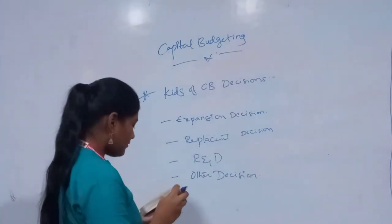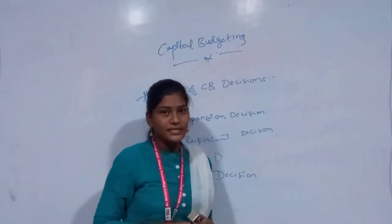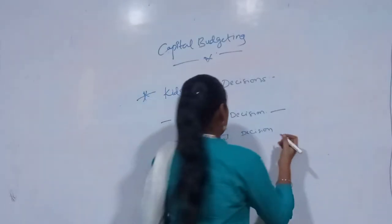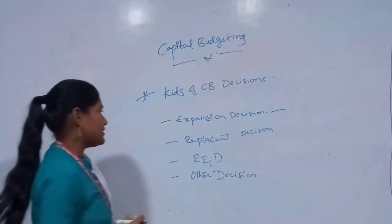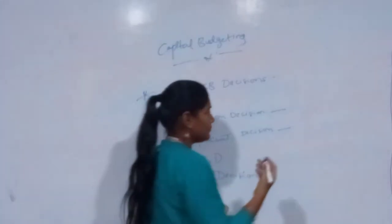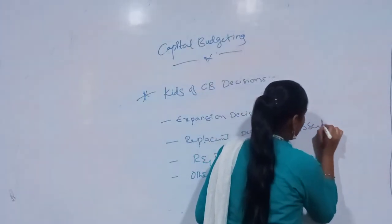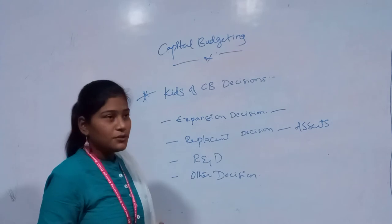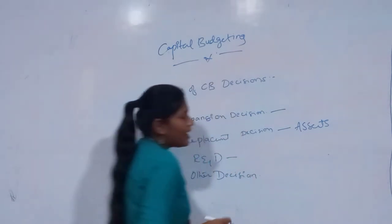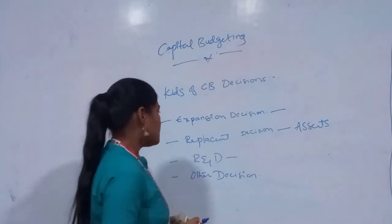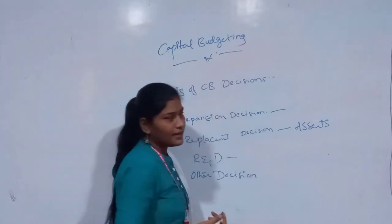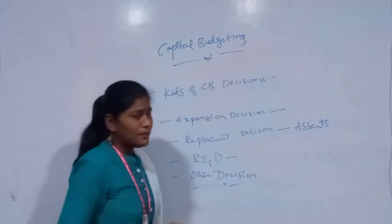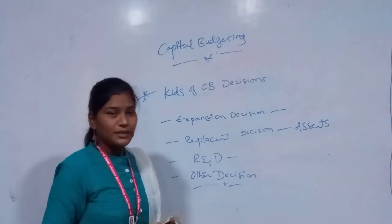If a company wants to expand its business to another geographical location, it has to apply capital budgeting techniques and evaluate the project. The replacement decision comes into play whenever a company wants to replace an asset — it has to take capital budgeting techniques into consideration so that it can make effective decisions. When it comes to R&D, it involves a greater capital outflow, so we need to apply capital budgeting techniques carefully to achieve better R&D decisions. Other decisions may include buying a truck or buying a new building.